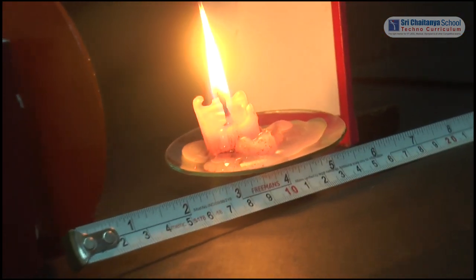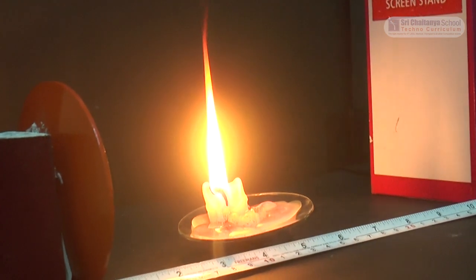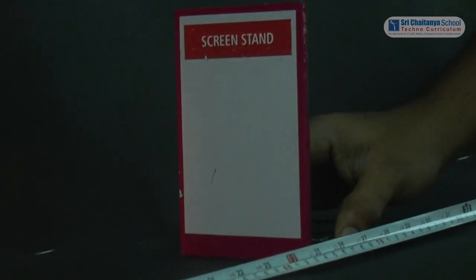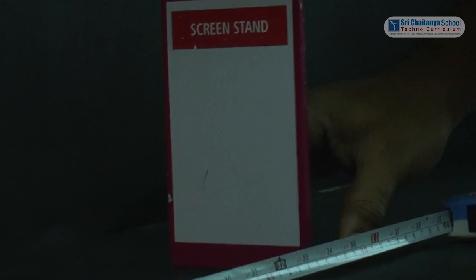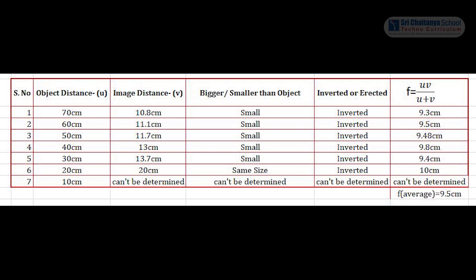Now place the object at 10 cm. Let us see what happens. Move the screen to try to trace the image. The image becomes so large that it is not captured on the screen. Using the table and finding the average of the focal lengths, we get the focal length of the mirror as 9.5 cm. The focal length of the concave mirror taken here is 10 cm, and by doing the experiment we found the focal length as 9.5 cm.